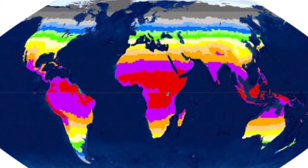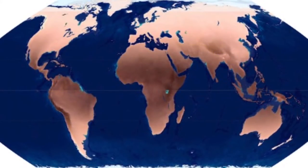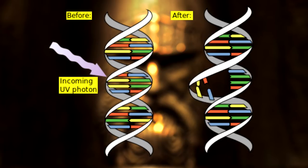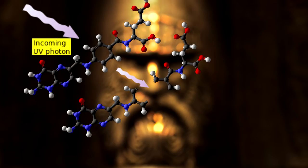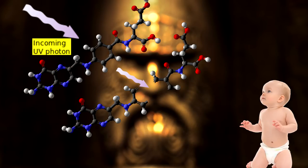Our evolution did not stop with the origin of Homo sapiens. As we spread around the world, our ancestors adapted to new environments, and some results of those evolutionary changes can still be seen in people living today. One example: people from different regions of the world differ in how much of the pigment eumelanin their skin cells produce, resulting in lighter or darker colored skin. The intensity of sunlight in different parts of the Earth matches very well with the average amount of eumelanin people have in those regions. Eumelanin acts as a natural sunscreen, so having more of it is advantageous in regions with very intense sunlight — like the tropics and at high altitudes. Ultraviolet light from the sun causes damage to DNA, which is why too much sun exposure can lead to skin cancer, but UV also breaks down folate, an important B vitamin needed to copy DNA every time a cell divides.